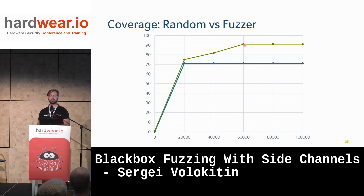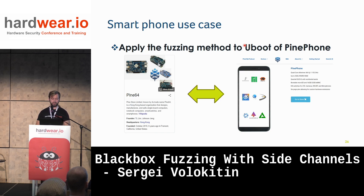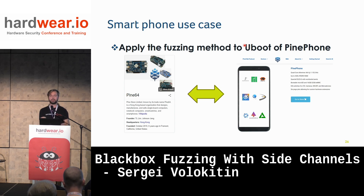We then considered real black box targets, but assessing results is difficult when you don't know the code. So for this presentation we used a real-life-ish target: a Pine phone, an open-source phone with code available, running U-boot as one of the boot stages. We used the Pine64 dev board — same hardware as the phone — so we can run the code and see how the approach works in a more realistic scenario. Having source code and specs helps us verify whether what the fuzzer finds corresponds to actual code differences.